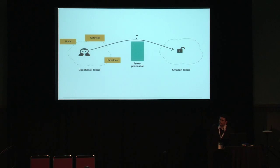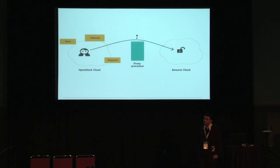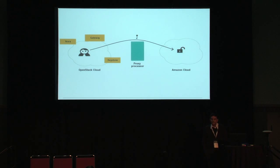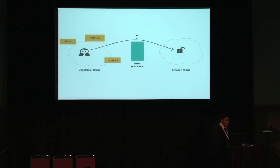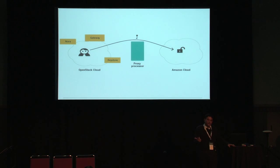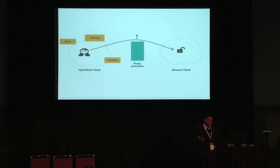Question: What is the proxy processor? The proxy processor runs in Amazon as one of the users in Amazon. The mechanism would be standard for OpenStack-to-OpenStack because that's something we can control. But when it goes to different cloud providers, since they all have their own authentication mechanisms, we need to somehow interface with those.